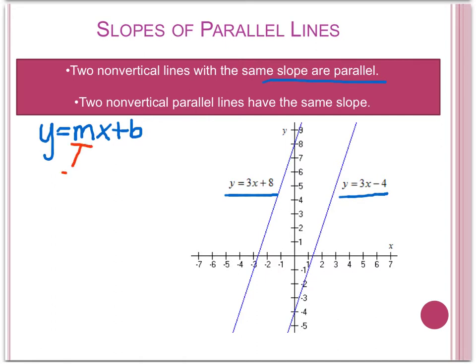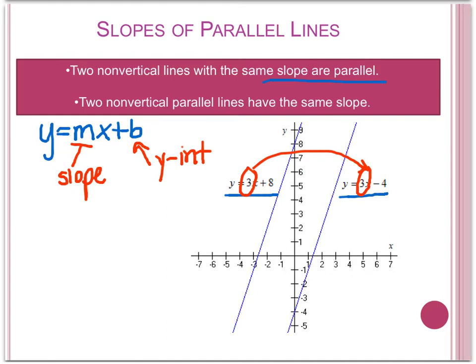m is the coefficient in front of x, and b is the y-intercept. As you can see, for y equals 3x plus 8, the slope is 3. In the next line, y equals 3x minus 4, the slope is also 3. And since these are equal, we know these two lines are parallel.